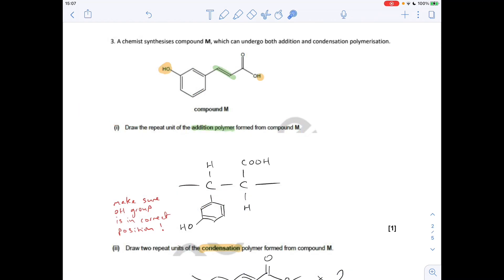Question three, we've got compound M, which can actually undergo both addition and condensation polymerization. The first part is draw the repeat unit of the addition polymer. That's when this carbon-carbon double bond is going to break open. Think of it like ethene. So there's your two carbons, hydrogen there and there, carboxylic acid group, and then this aromatic group here.